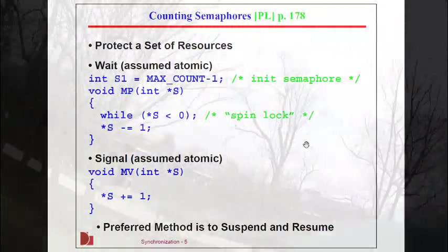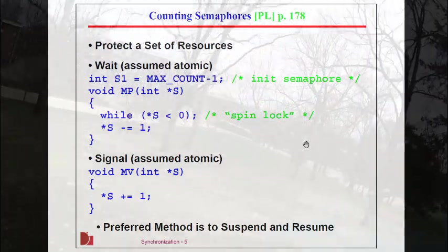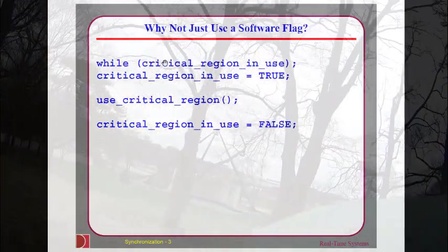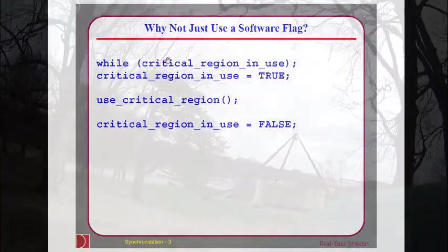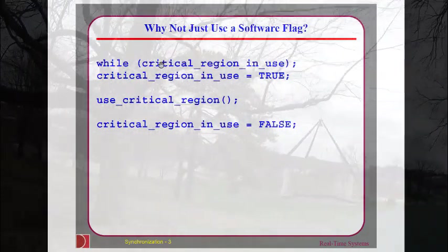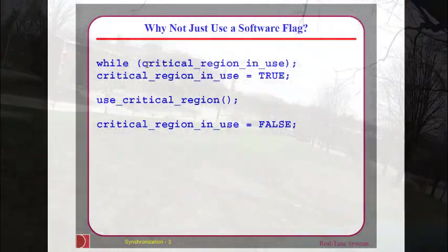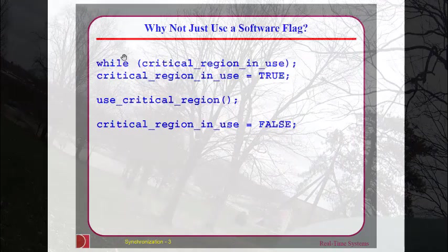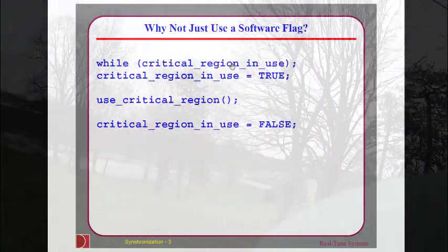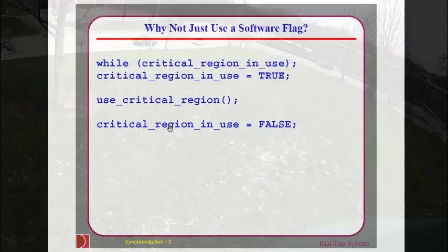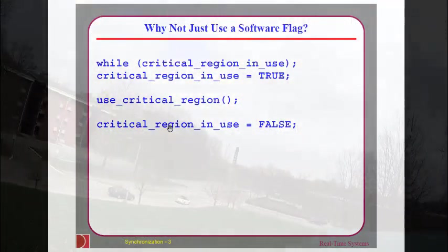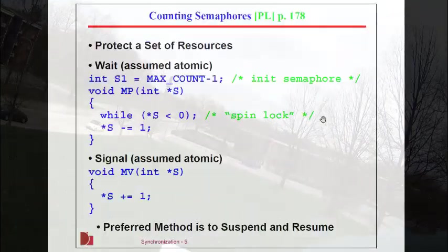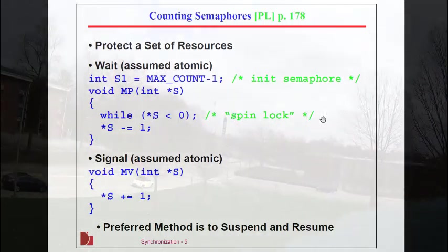They would just send it to the generic queue. You wouldn't know which of the five printers is being used. But at any time, there's always going to be access unless all five printers are being used at the same time. Then you would start blocking. If we imagine the software flag, this is functionally correct. If you can protect the critical testing and setting of this flag, the idea is the same that tasks would block here if it is in use.